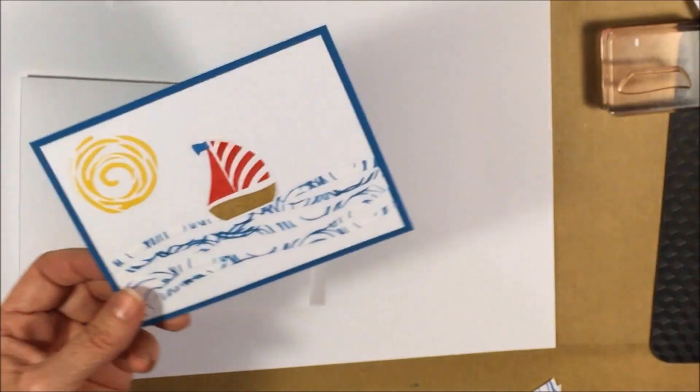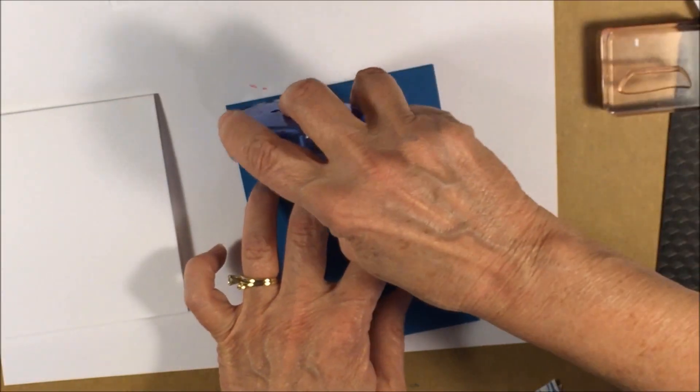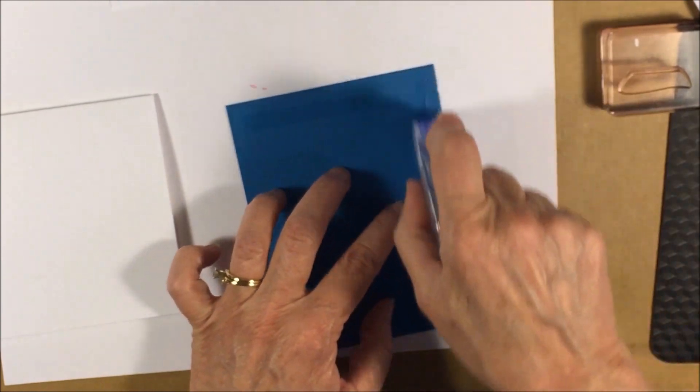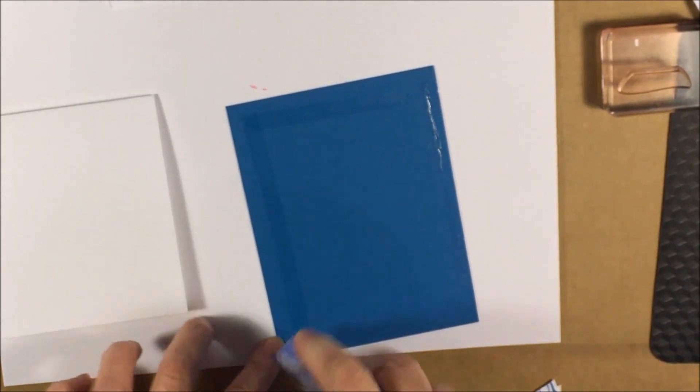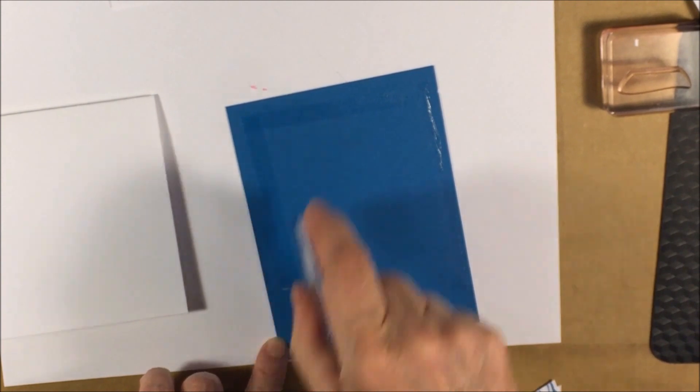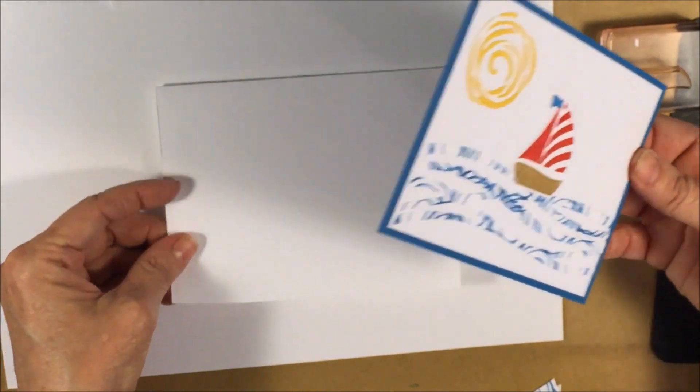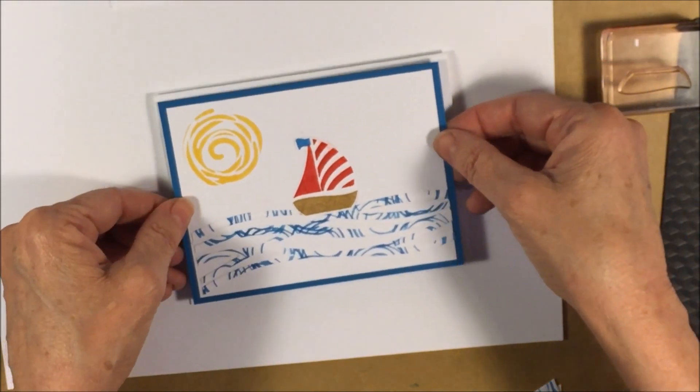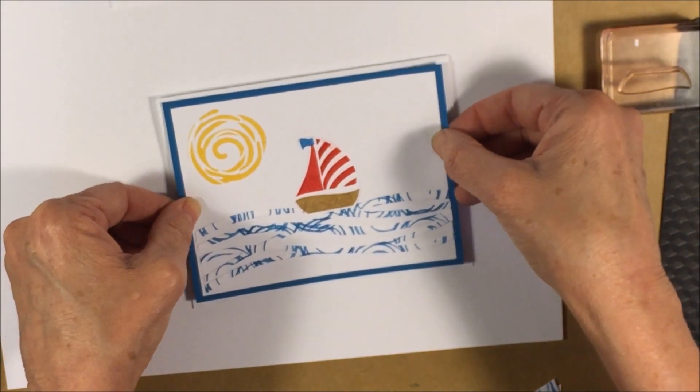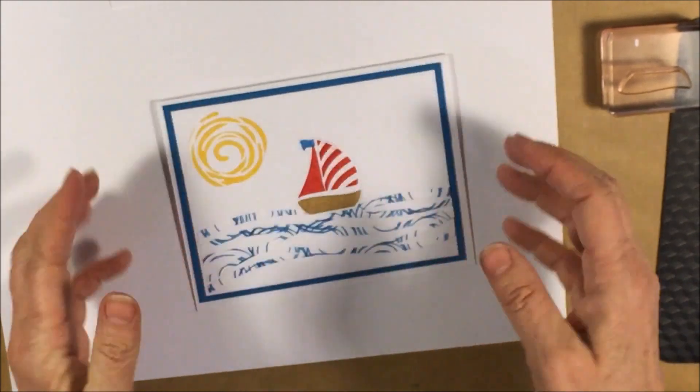And then we'll attach that to our card base. I think my glue might be a little bit wet. Attach that to our card base. Make sure you're putting it on the right way. Don't want our card opening backwards. And that's it.